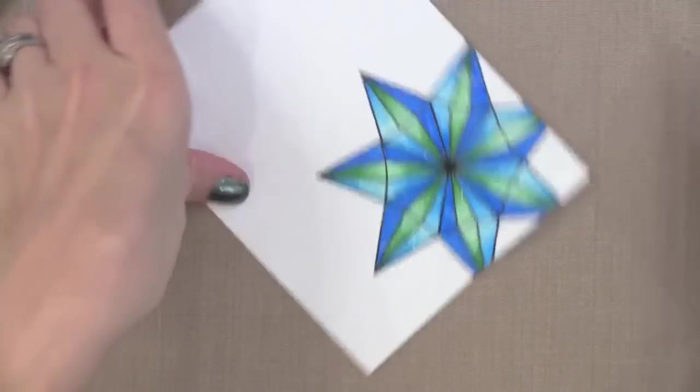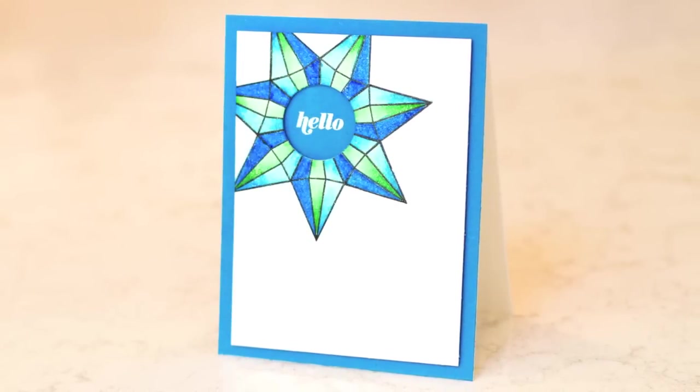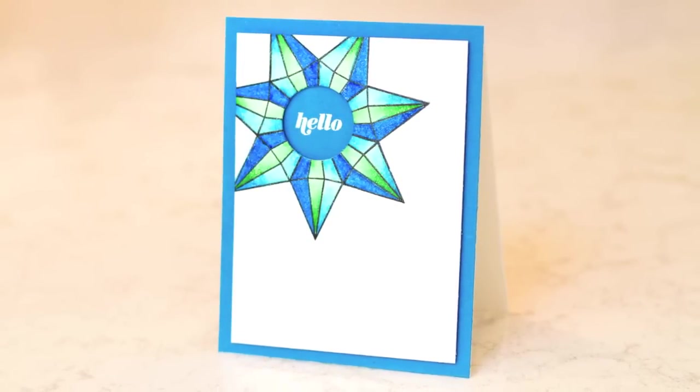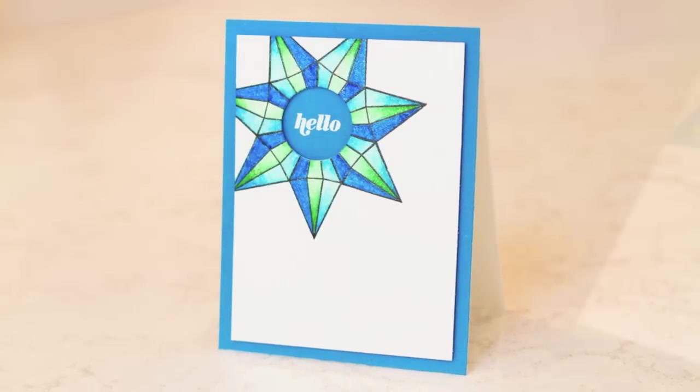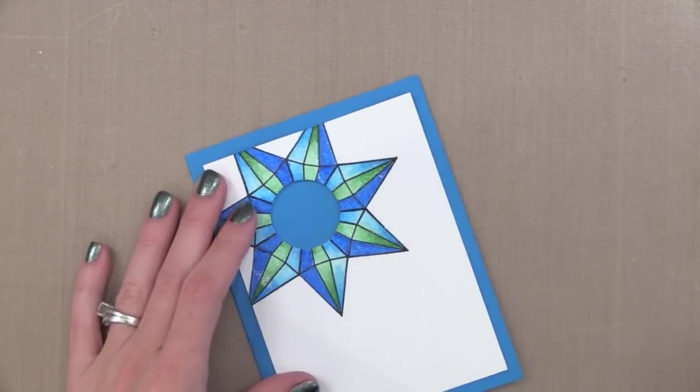So there you can see the great color and the great shimmer that you can get very easily with a marker and the Wink of Stella. Now while I have this project out let's go ahead and finish it up and turn it into a card. I have cut a card base that is four and a quarter by five and a half and I trimmed down my stamped piece a little bit so that blue is showing around the edge.